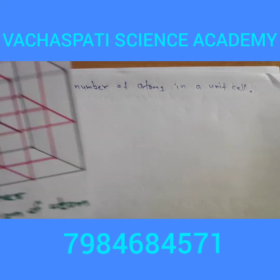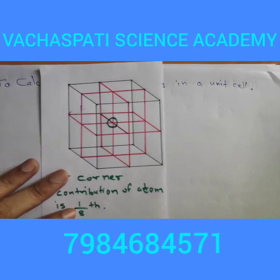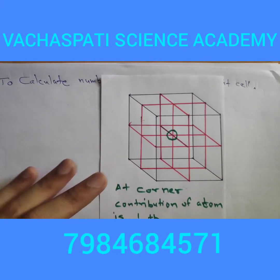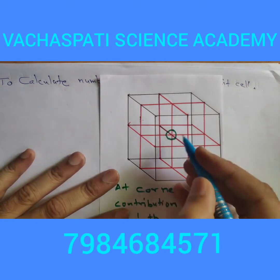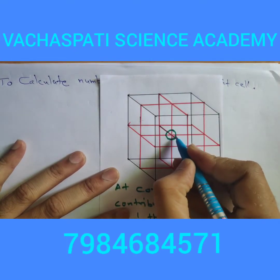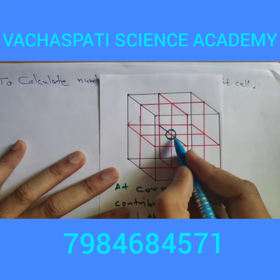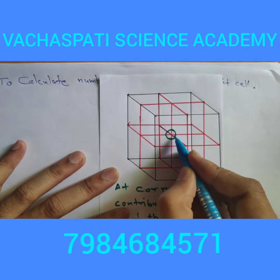Let's begin with one cube shown here. You can see a cubic crystal where on eight corners we have eight atoms. It is divided into eight unit cells. The atom at the center corner is covering only this portion — this is the portion of one unit cell only.